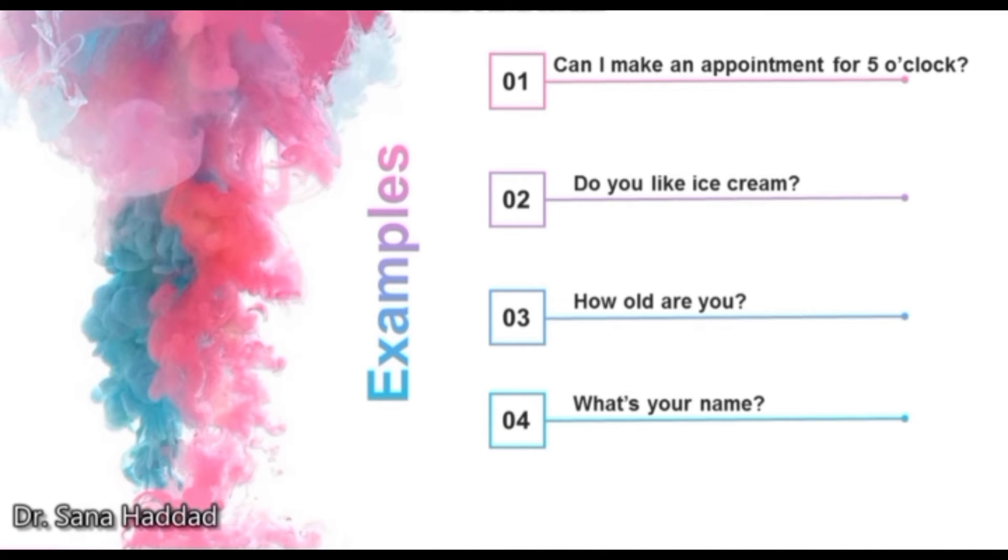So the first two sentences are yes-no questions, which are also closed-ended questions, and the second two are wh-questions, which are also open-ended questions. So the answer to the first two would be yes or no, and the answer to the third one would be I'm 5 years old, for example, and to the fourth one would be my name is Josh.